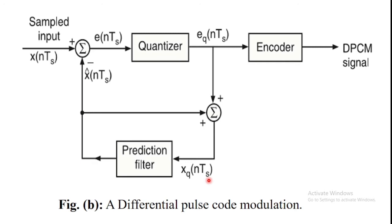The working principle of DPCM is that the differential pulse code modulation works on the principle of prediction. The present sample value is predicted from the past sample value. The prediction may not be exact, but it is very close to the actual sample value. This is the figure of the transmitter of the differential pulse code modulation system.